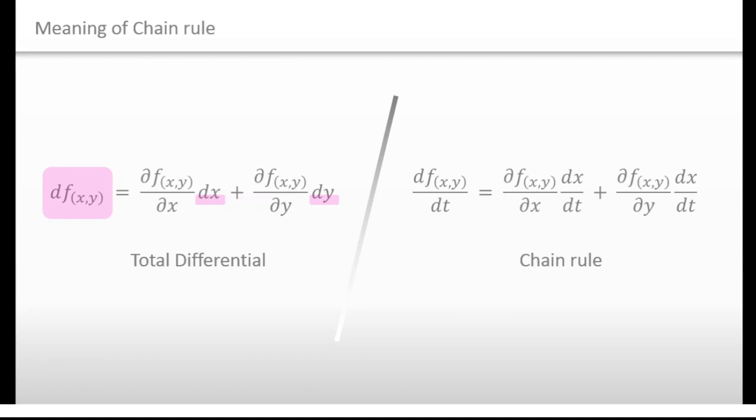While when it comes to chain rule, this is not the amount of how much you go up. As you can see, this is the amount of how much you go up. And this is divided by dt. I said divided, but strictly speaking, this is different from division because this is, you know, differential. However, what we are doing in this video is not to prove this equation, but to understand the concept of this. And as you know, the concept of differential is division.